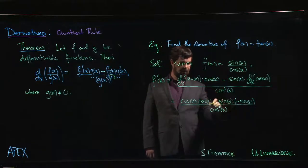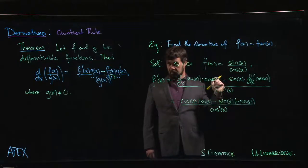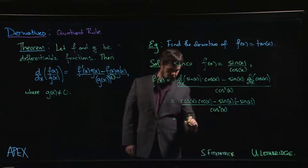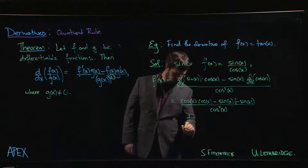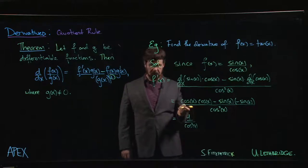cos squared x plus sine squared x - we know that's equal to one. So what do we get? We get one over cos squared x. It's a little bit nicer of a result.